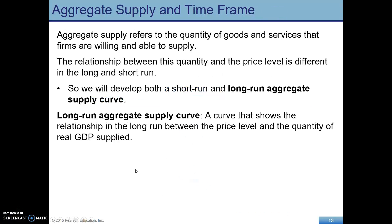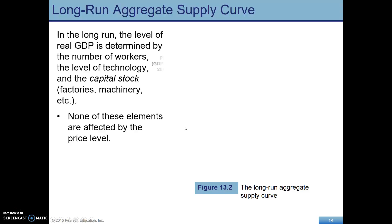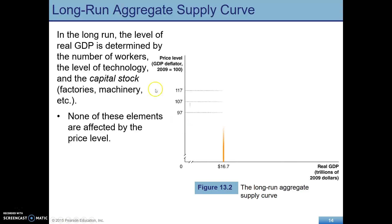For aggregate supply, we're going to have two curves: a short-run curve and a long-run curve — SRAS and LRAS. Let's look at long-run aggregate supply first. This is about what determines real GDP — the factors of production, like the number of workers, level of technology, and inputs.